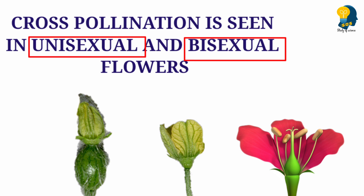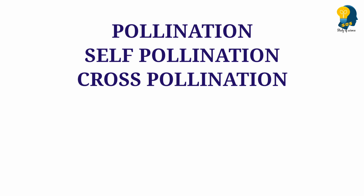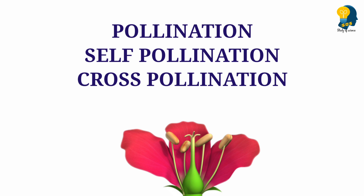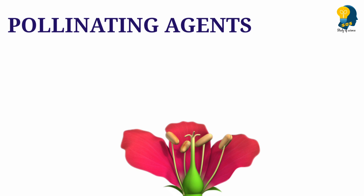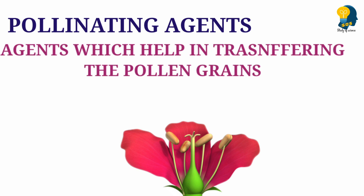I hope you all have understood what is pollination, self-pollination, and cross-pollination. The transfer of pollen grains takes place from anther to stigma. How does this happen? This transfer takes place with the help of some pollinating agents. The agents which carry or transfer the pollen grains from the anther to stigma are called pollinating agents.